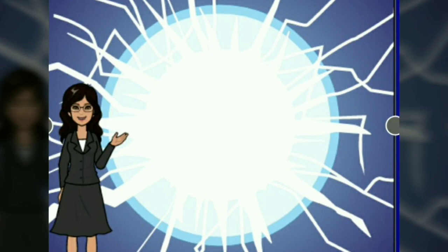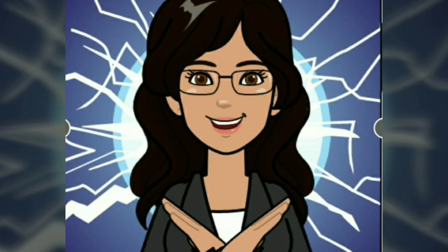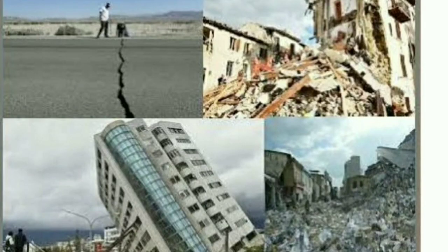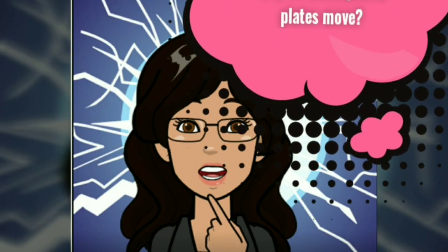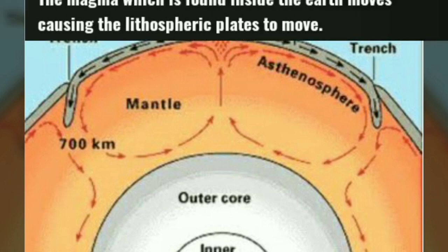For example, a giant tectonic plate under the Indian Ocean known as the India-Australia Capricorn plate is breaking apart at about 1.7 millimetres per year. However, such movements can trigger millions of years of devastating earthquakes. You have studied in the previous chapter about the lower mantle which is in liquid form, known as magma. It moves in a circular manner like boiling water due to the high temperature which prevails inside the earth.